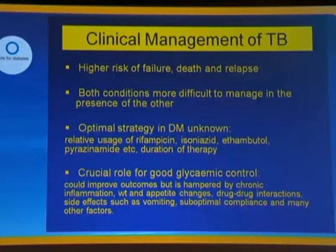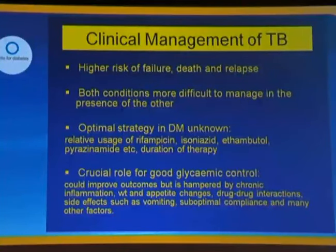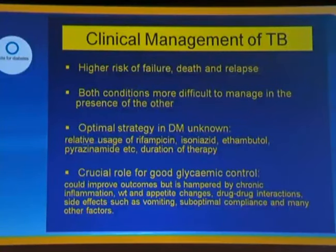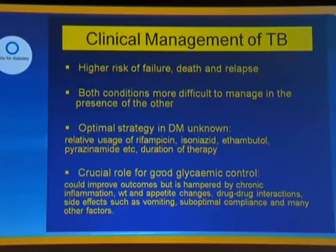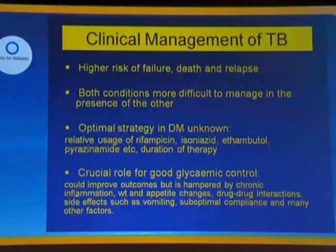Regarding clinical management: as already mentioned, there is a higher risk of failure, death, and relapse. Both conditions — diabetes and TB — are more difficult to manage in the presence of the other. The optimal strategy in diabetes is not really known and not fully worked out, including the relative usage of the various first-line drugs and the duration of therapy. It's important, however, to emphasize that there is a crucial role for good glycemic control, which could well improve outcomes, but is hampered by drug-drug interactions, chronic inflammation, side effects, and many other factors related to diabetic complications.